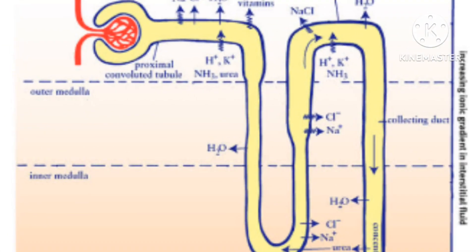Nephron is the functional unit of the kidney. It is the structure that actually produces urine in the process of removing waste and excess substances from the blood. Nephrons work through a two-step process: the glomerulus filters our blood, and the tubule returns needed substances to our blood and removes waste.